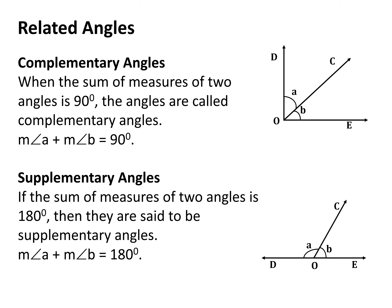So the next one is supplementary angles. If the sum of measures of angles is 180 degrees, then they are said to be supplementary angles. Here in the given figure, you can see that measure angle A plus measure angle B is equal to 180 degrees, and they are said to be supplement to each other — angle A is supplement to angle B and angle B is supplement to angle A. Clear children?